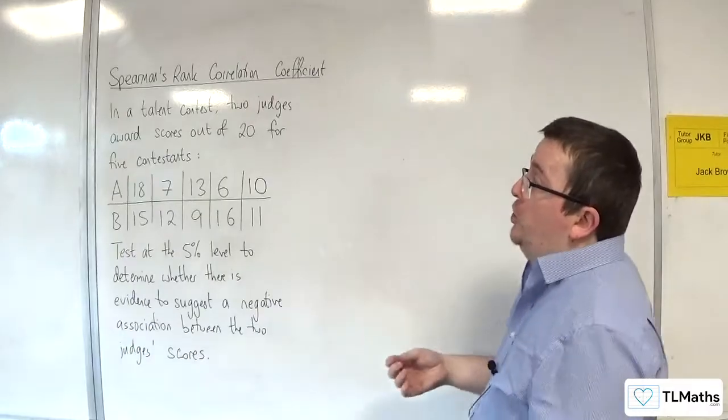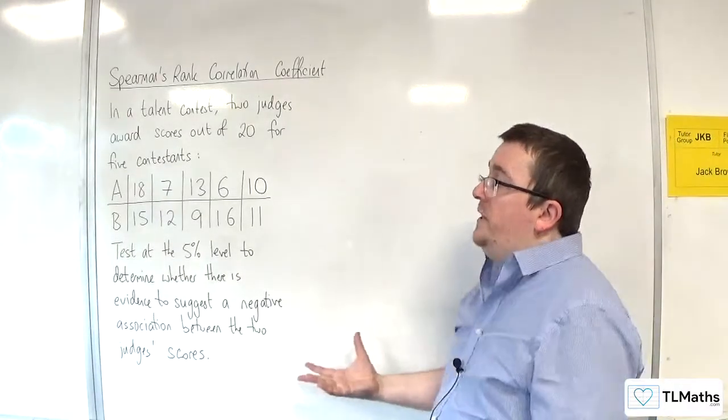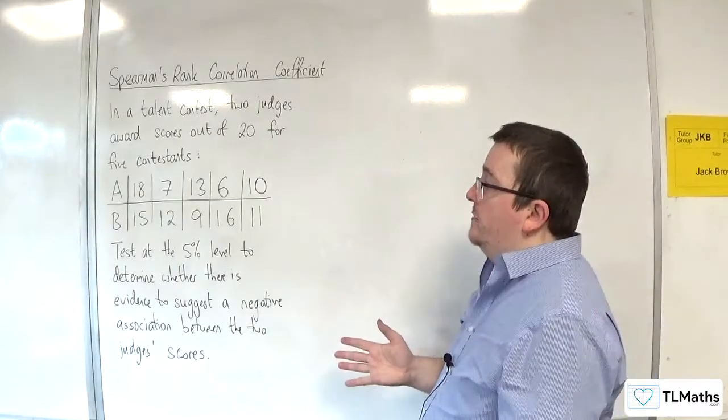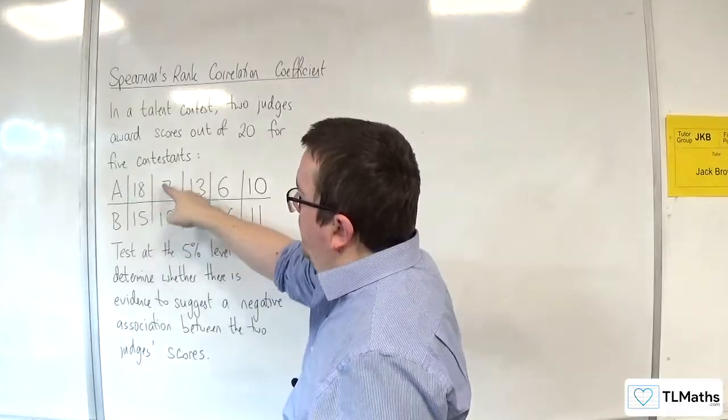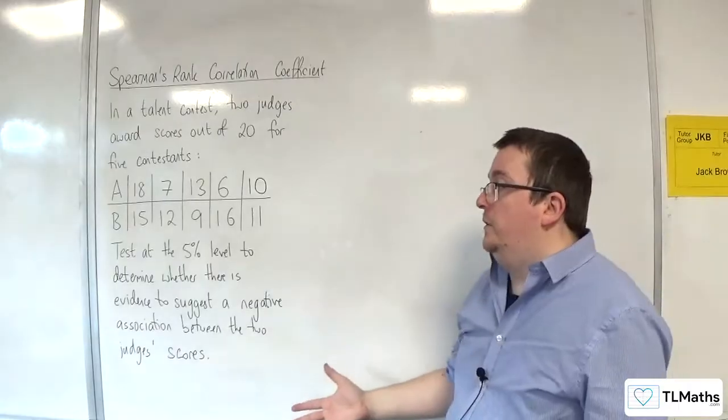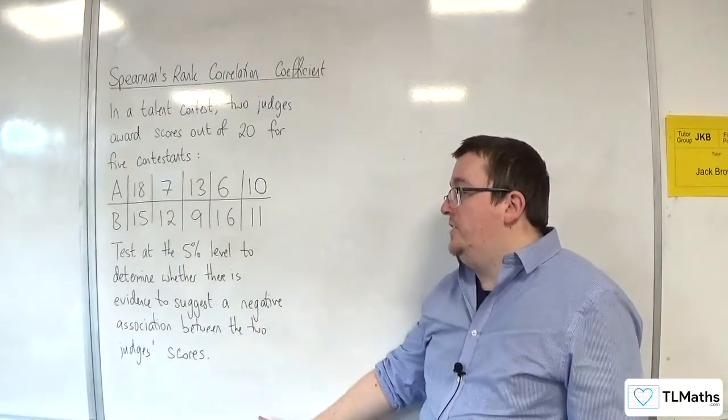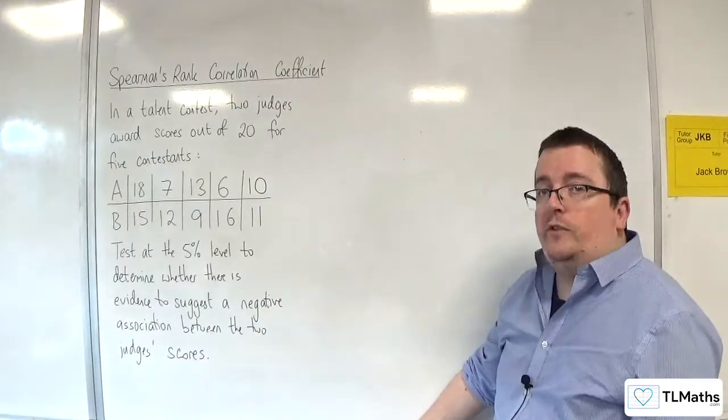So, in this video, we have two judges, and in a talent contest, they're awarding scores out of 20 for five contestants. So, here are the two judges' scores. This is contestant number one, contestant number two, three, four, and five. Test at the 5% level to determine whether there is evidence to suggest a negative association between the two judges' scores.